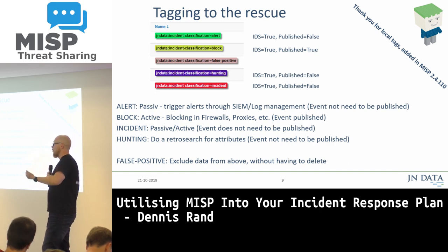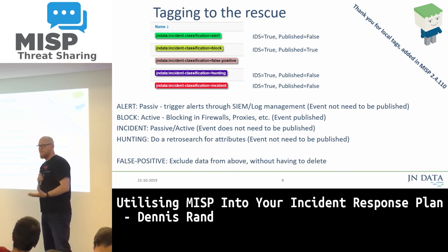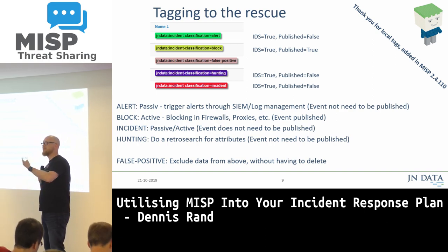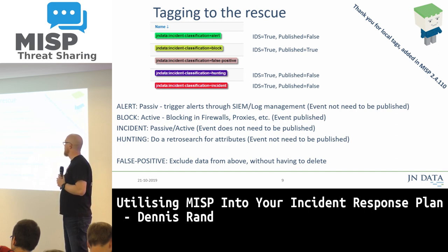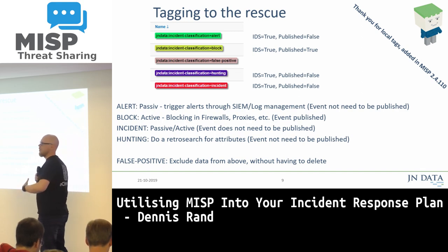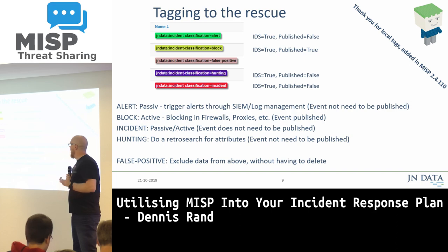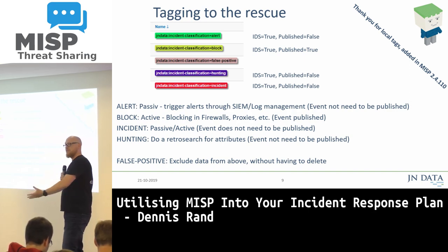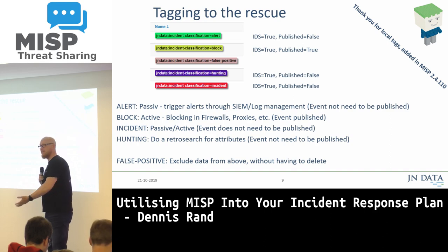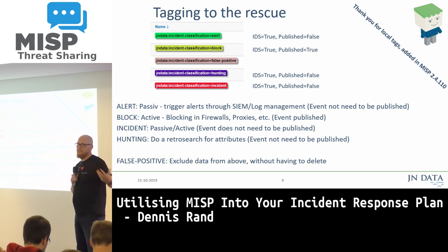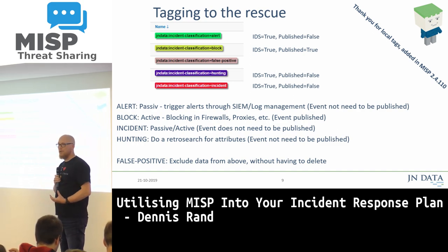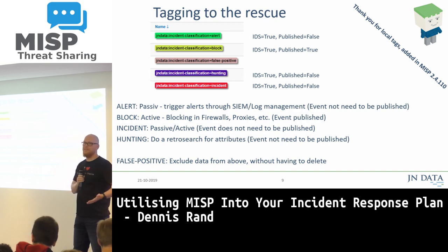We have alert tags used only for passive triggering, meaning we want to search SIEM in real time with these indicators. These tags can be set both on the entire event or on individual attributes. The blocking tag means you want to block something — you want to go into the active part of it. We also have the hunting tag for SIEM solutions. When something has the hunting tag, it will search backwards in time to see if there have been any hits in the past, because that's also a really important part. Then we have the incident tag for when we need to do both the passive and the active defense at once.